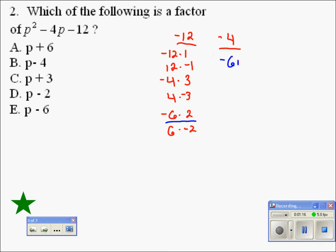So negative 6 plus 2 fits both criteria. It multiplies to negative 12 and it adds to negative 4. These will be the values we put inside of our factored form, our two sets of parentheses, as factors.